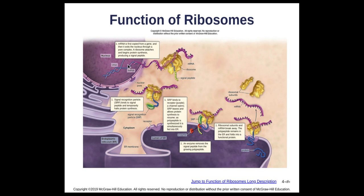Here is how protein synthesis works: chromatin in the nucleus contains your DNA. A messenger RNA is made and travels out into the cytoplasm to find a ribosome. That mRNA is then translated into a chain of amino acids — a protein — which either stays in the cytoplasm or goes into the endoplasmic reticulum to be finished before being brought to where it is needed in the cell.